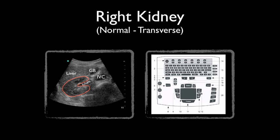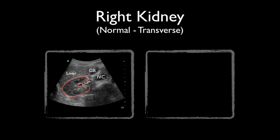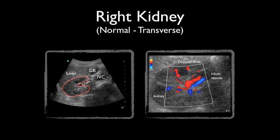From the transverse position, you can see if the kidney has any blood flow. On the ultrasound console, find the color button. Simply place the color Doppler box around the area of the hilum.